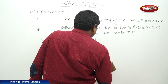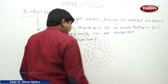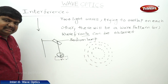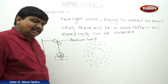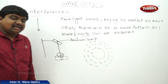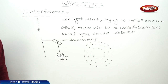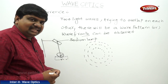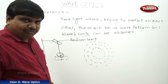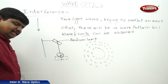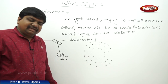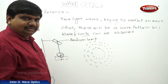It appears as a fringe pattern. The light waves which are incident and reflected try to overlap on each other. Because of their overlapping, their intensities and energies are distributed in a form of waves or wavefronts. This phenomenon is called interference. This interference is of two types: constructive and destructive.